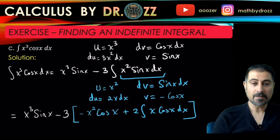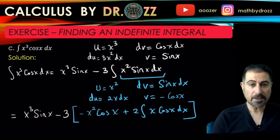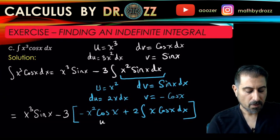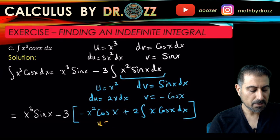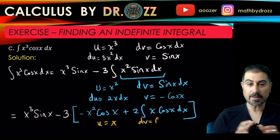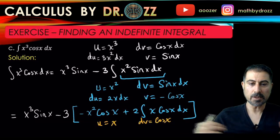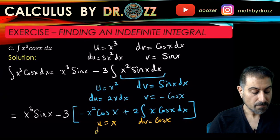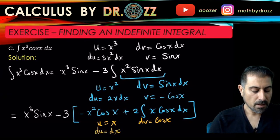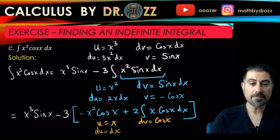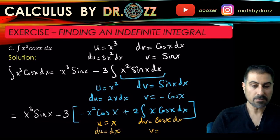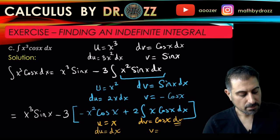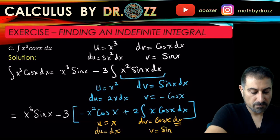By using LIATE, I'm going to call x again to be u. So u is going to be x and then dv is going to be cosine x, and I use brackets not to get confused because eventually I'm going to bring all together. So du equals dx and then v is the anti-derivative of cosine x, that is sine x.